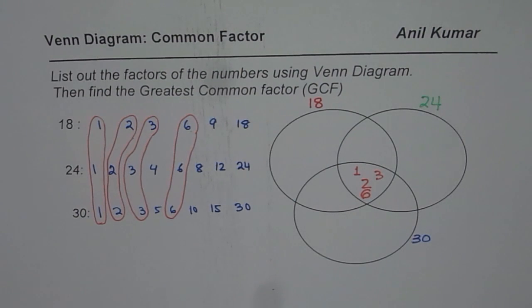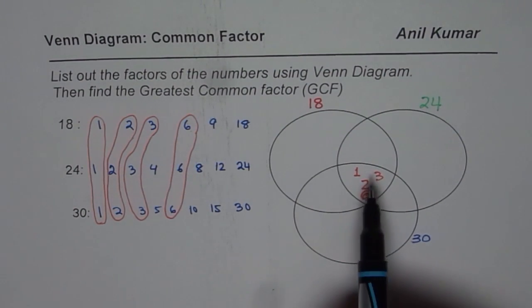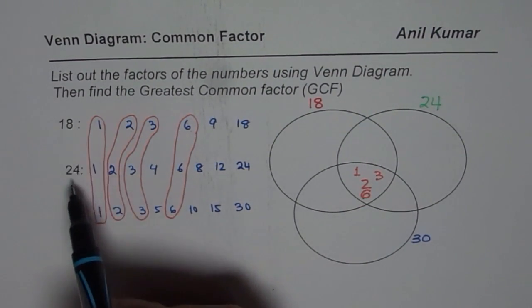Now, let us write down the factors which are common to 18 and 24. These are definitely common: 18 and 24. Let us see from the list remaining, is there anything common?